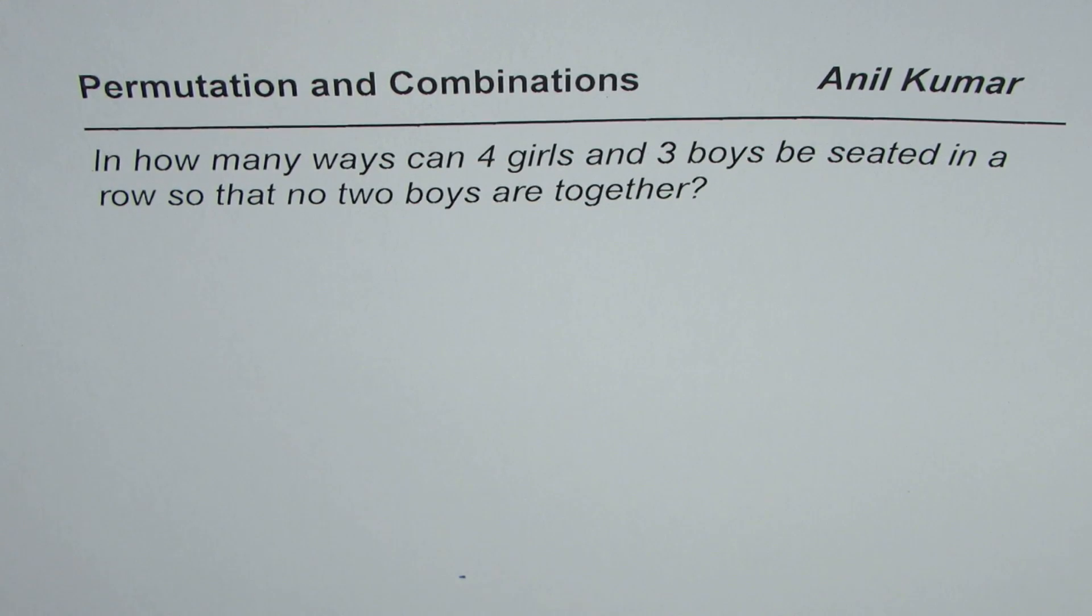I am Anil Kumar and here is a very interesting question on permutation and combination. The question here is, in how many ways can four girls and three boys be seated in a row so that no two boys are together?